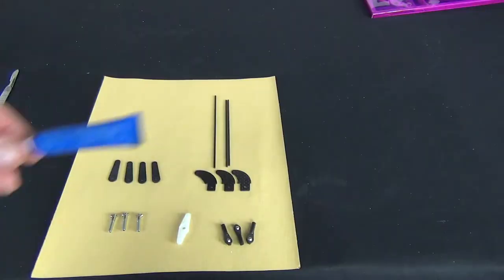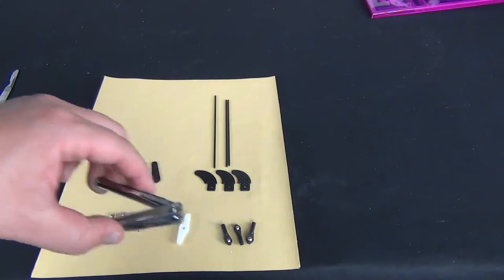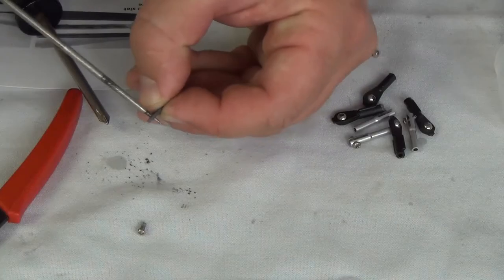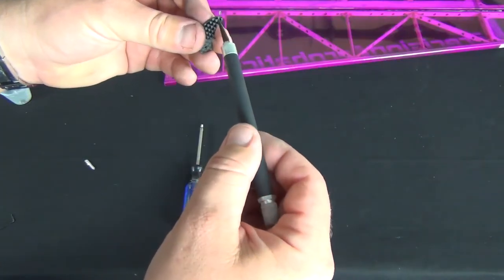You'll also need red Loctite, nail clippers, epoxy, a mild solvent like denatured alcohol to clean the surfaces, and a needle file or other tool to exactly enlarge the holes in our carbon fiber pieces.